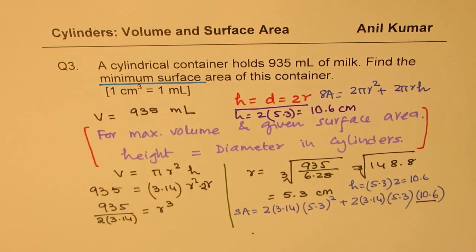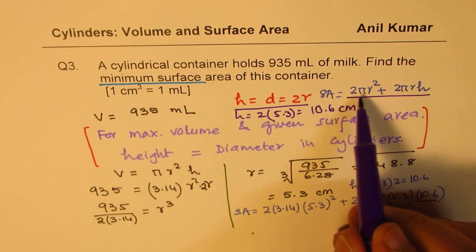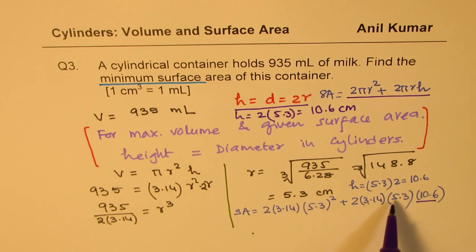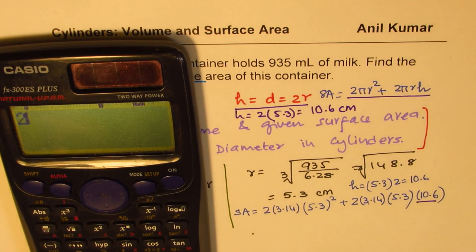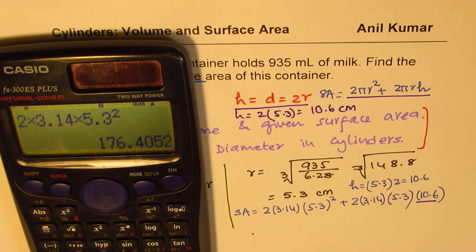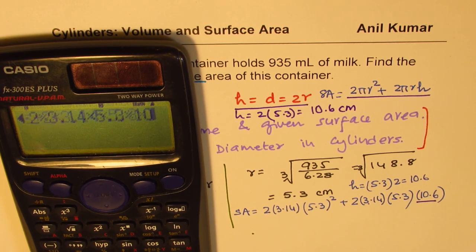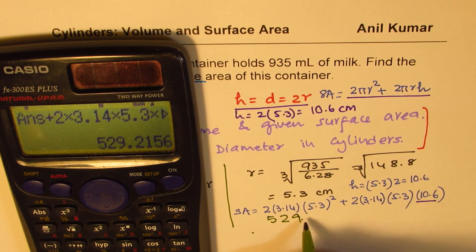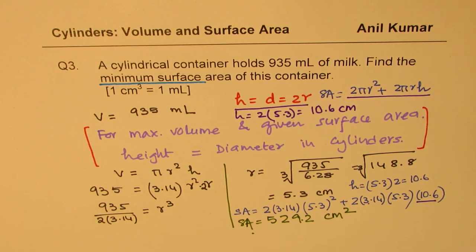So we are substituting that value to find the answer. Surface area is 2 pi r squared plus 2 pi r h. We have: 2 times 3.14 times 5.3 squared, plus 2 times 3.14 times 5.3 times 10.6. And that gives you 529.2 centimeters squared. So the minimum surface area for this container will be 529 centimeters squared.